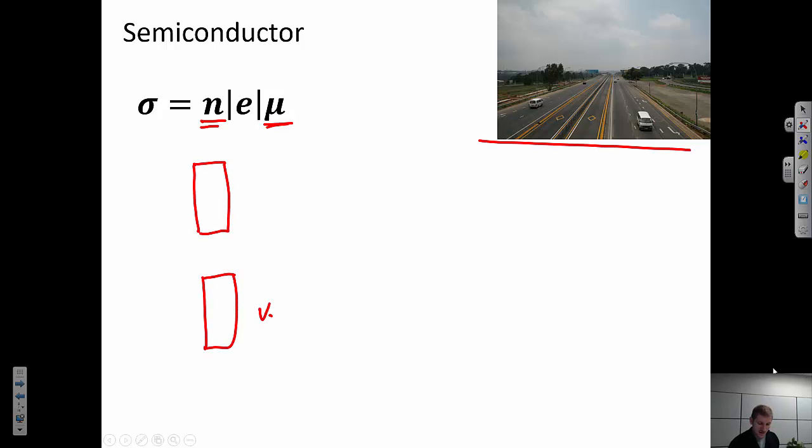Here I could have my valence band, and here I have my conduction band. The valence band is going to be full, and the conduction band is relatively empty. So I can increase the number of carriers in that conduction band by one of two ways. I could increase the temperature to excite more up there, or I could put dopants in.